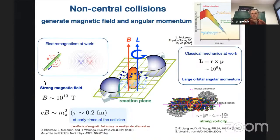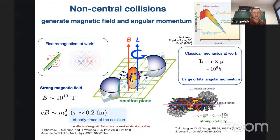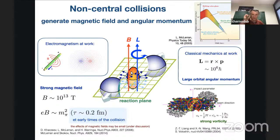Now let's make the plasma rotating. We need this because in non-central heavy-ion collisions, when two ions collide they form a rotating plasma. Since the plasma is created by positively charged ions, it will be charged, and since it's rotating it acquires angular momentum. This generates a magnetic field directed out of the reaction plane. However, this magnetic field decays quite quickly, and we will not touch it here — we'll concentrate only on the effect of mechanical rotation itself.